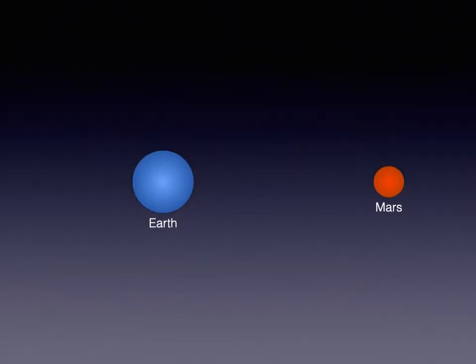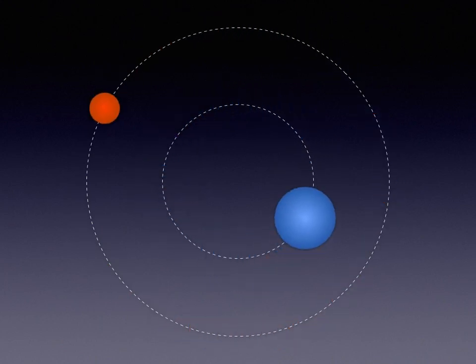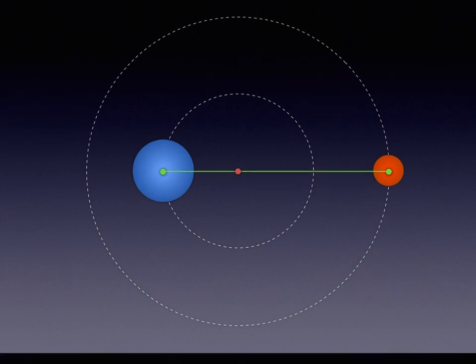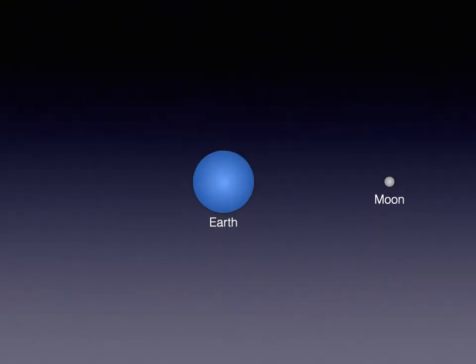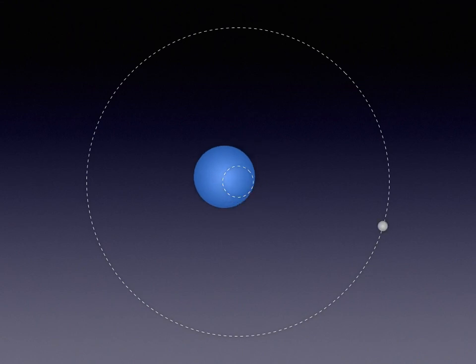Next, let's consider two objects of unequal mass, like the Earth and Mars. If these two planets were in orbit around each other, they would follow different paths, again orbiting their common center of mass, which is close to the Earth since it is more massive than Mars. And finally, let's consider the Earth and Moon and how they actually orbit each other. The two objects are orbiting their common center of mass, which happens to be beneath the surface of the Earth, but that does not change the fact that the Earth and the Moon are in orbit around each other.